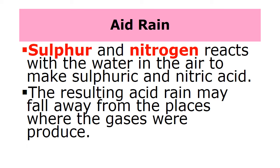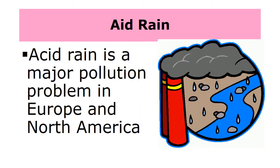Sulfur and nitrogen react with the water in the air to make sulfuric and nitric acid. The resulting acid rain may fall away from the places where the gases were produced. Acid rain is a major pollution problem in Europe and North America.